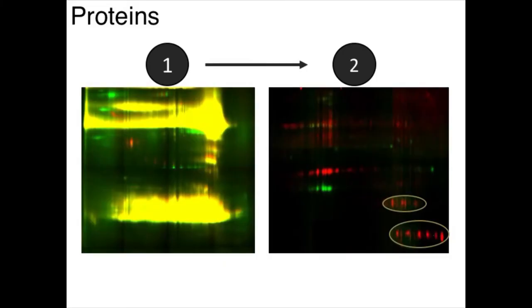We set out to discover the set of proteins that are being flagged by these autoantibodies in the disease. A human cell produces over 2 million different protein types, so we rely on this technology to resolve these proteins based on their physical properties. This is like finding a needle in a haystack.